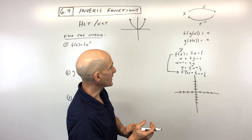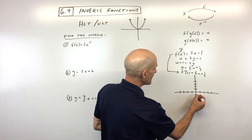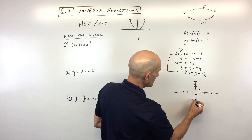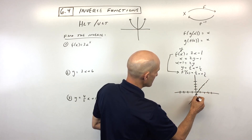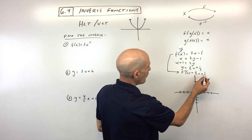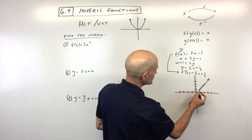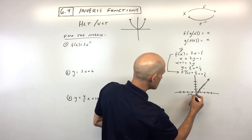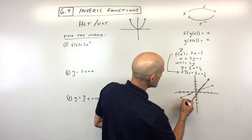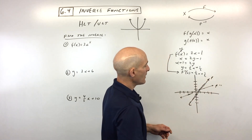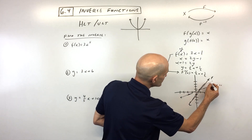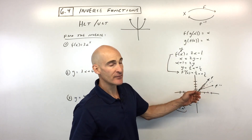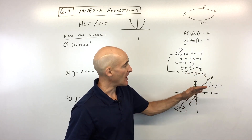Let's go ahead and graph these to see what they look like. f of x equals 2x minus 1 has a y-intercept of negative 1 and a slope of 2, so we go up 2 over 1. Now if we graph the inverse function, we've got a y-intercept of one-half and a slope of one-half, which is up 1 over 2. One thing you'll notice about these graphs is that they're reflections over this dashed line — the line y equals x. So the original function and its inverse are going to be reflections over that 45-degree line.